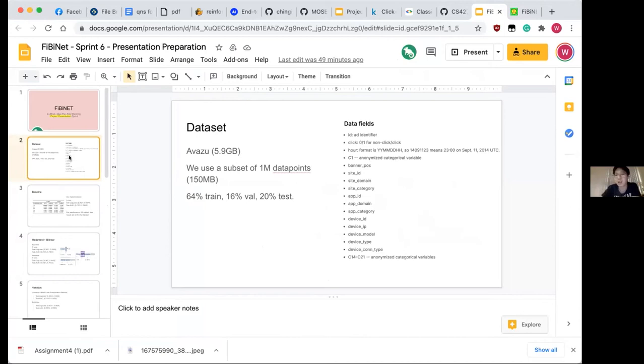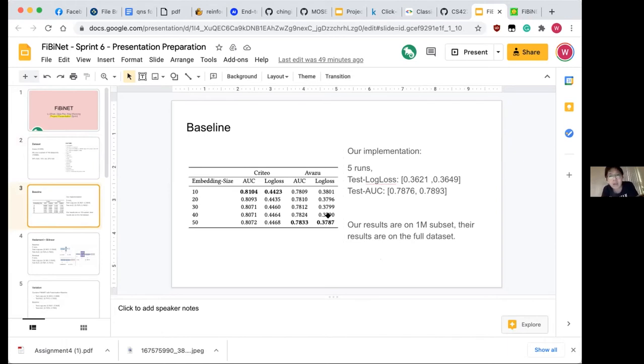If you look at the picture on the right, there's this click which is zero or one, and the rest are all variables, basically information that helps the prediction. Because the dataset seems to be quite huge, we use a very small subset instead. We are using only 1 million data points, which is like around 2% of the total dataset. We break it down into training, validation, and test.